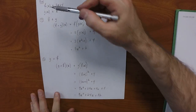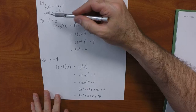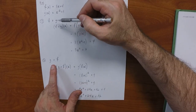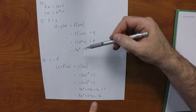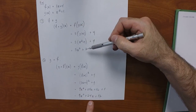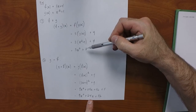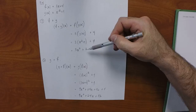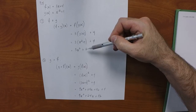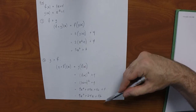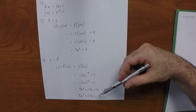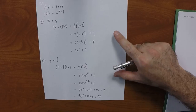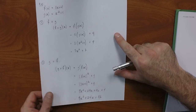Notably, we had two functions and composed them in two different orders and got a different result. That's not surprising — it must be this way. This one is like underwear then pants, and this one is pants then underwear. The result is different.